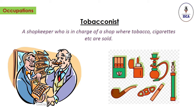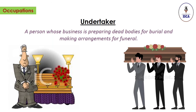Tobacconist. A shopkeeper who is in charge of a shop where tobacco and cigarettes are sold is called a tobacconist. Undertaker. An undertaker is a person who prepares dead bodies for burial and makes arrangements for funerals.